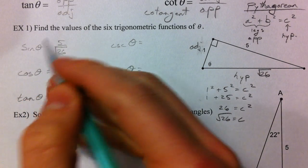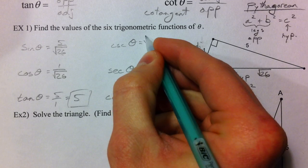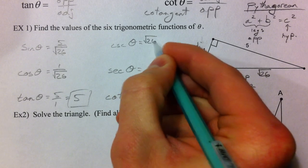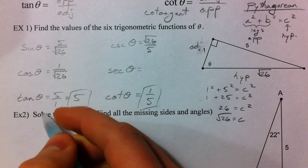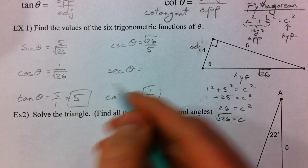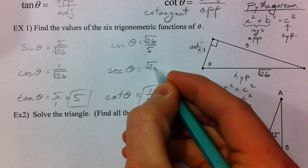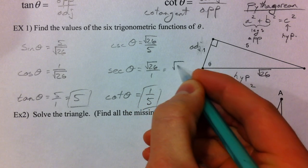Cosecant is the reciprocal of the sine. So, I just flip it over. Root 26 over 5. Secant is the reciprocal of the cosine. And so, it's just going to be root 26 over 1, which is root 26.